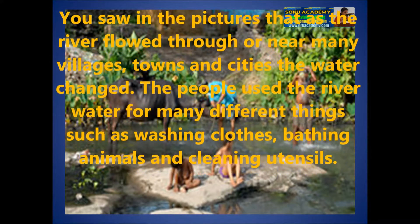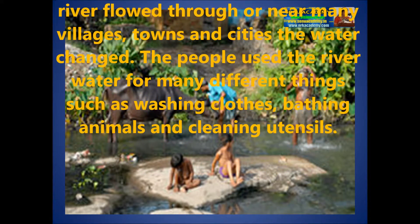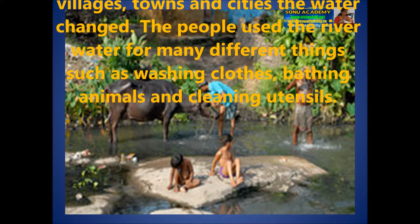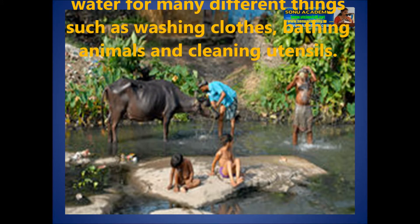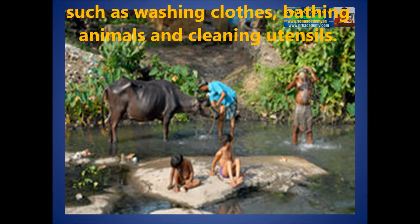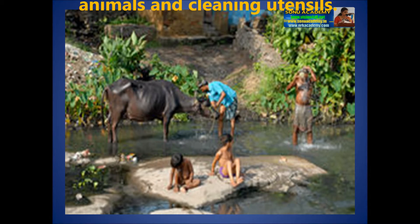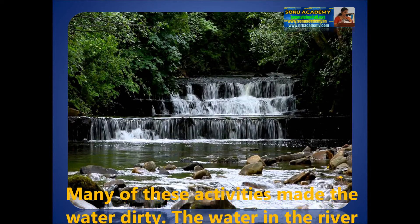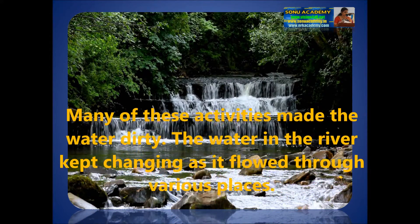At this time, the people used the river water for many different things such as washing, washing clothes, bathing animals and cleaning utensils. In many of the cities, the water is made dirty.